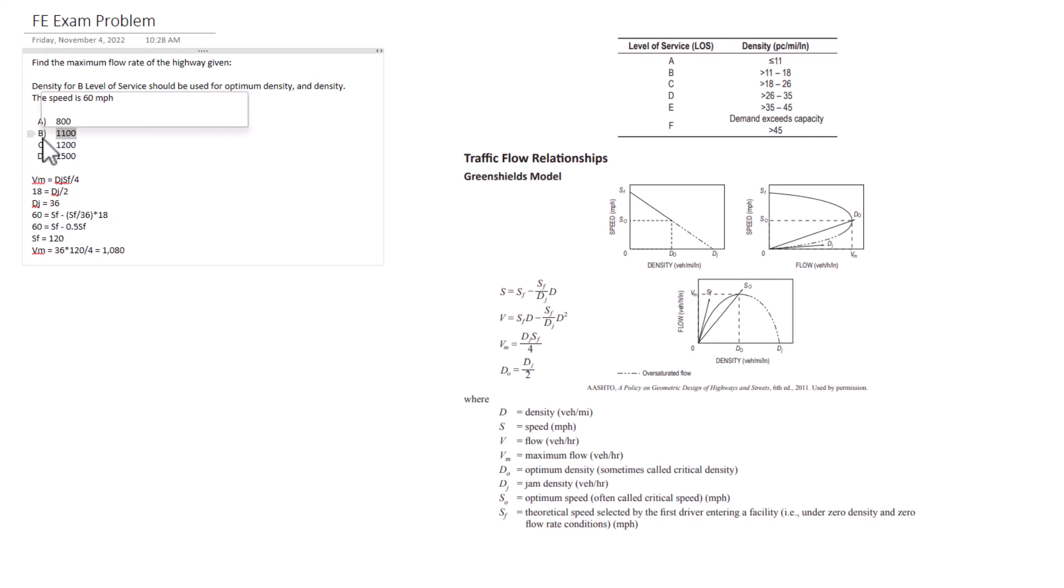And so we're going to be putting B as our answer here. So a lot of steps here. Basically, find the variables to begin with using the table, and then using these different equations to solve for some of the other variables. So we found the jam density, then we were able to find the theoretical speed, and then given those two values, we were able to finally find that maximum flow rate in vehicles per hour.